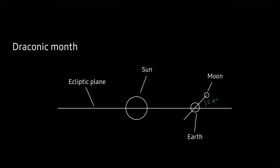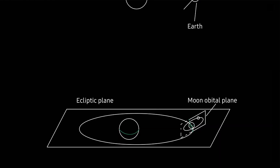Because of this inclination, even if the Sun, Moon, and Earth appear aligned when viewed from above the ecliptic plane, they are not necessarily truly aligned. To be truly aligned, the Moon also needs to be inside the ecliptic plane. The Moon is truly inside the ecliptic plane at two points of its orbit called nodes. The draconic month — also called node to node — is the time for the Moon to return to one of its nodes, equal to 27.212221 days, or approximately 27 days, 5 hours, 5 minutes, and 36 seconds.